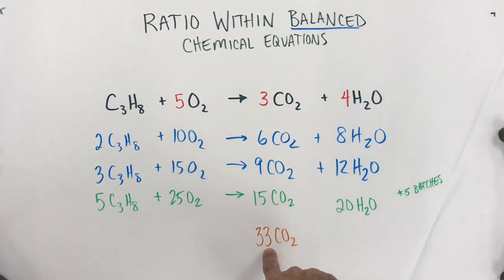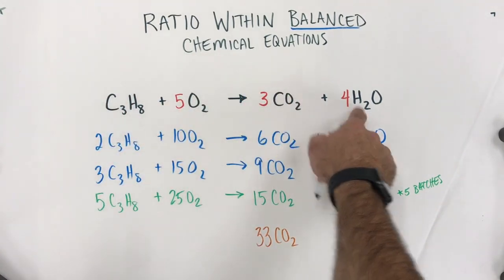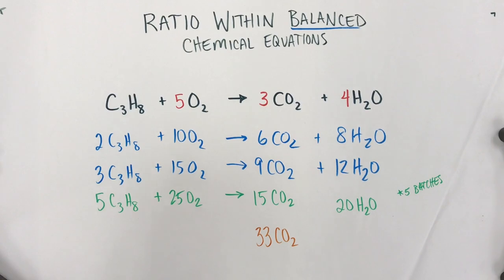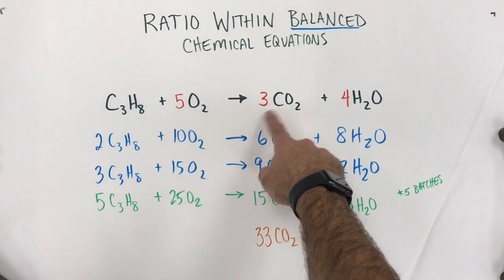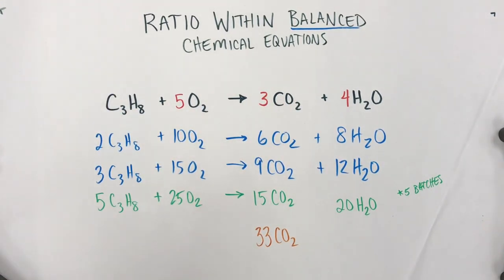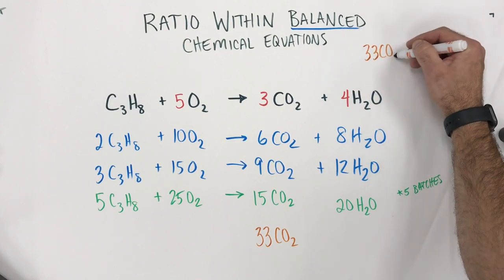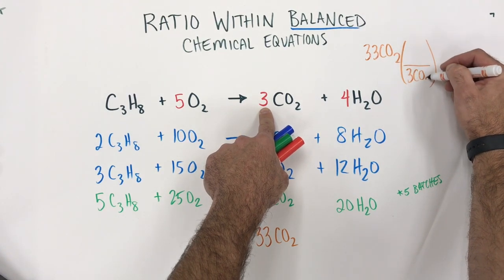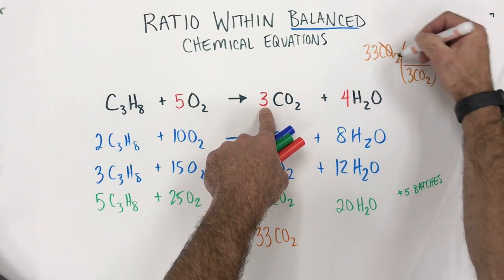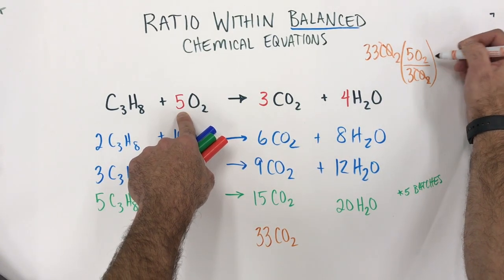Well, unit factoring can be used even in this situation. I want 33 carbon dioxides, and I have up here equalities between these different substances. In other words, for every three carbon dioxides, I need five oxygens. Or, for every three carbon dioxides, I need one propane. So, I can do this as a couple unit factor problem. So, I'm going to write that up here. If I want 33 carbon dioxides, I know that for every three carbon dioxides, doing it like that to cancel carbon dioxide, that I need five oxygen molecules.